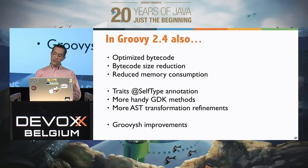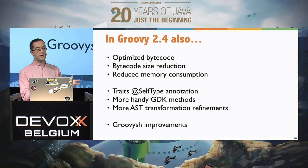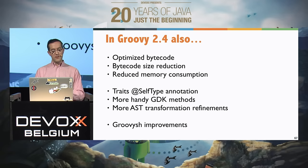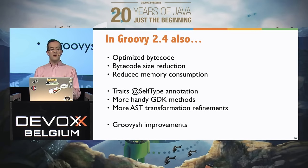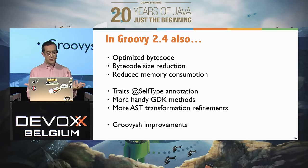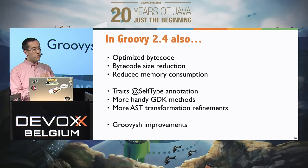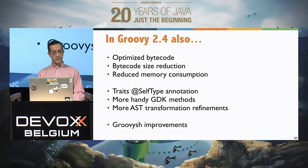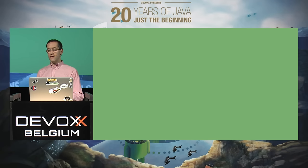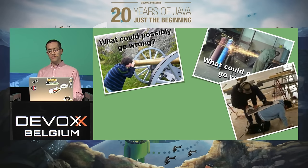Because of the Android support, we also worked on optimizing the bytecode to make it even leaner in terms of size. On mobile devices, the available memory is usually smaller than on server applications, so that mattered. There were also more refinements in the trait support with a specific annotation to restrict traits to certain types — that's what @SelfType is useful for. More AST transformations and so on.